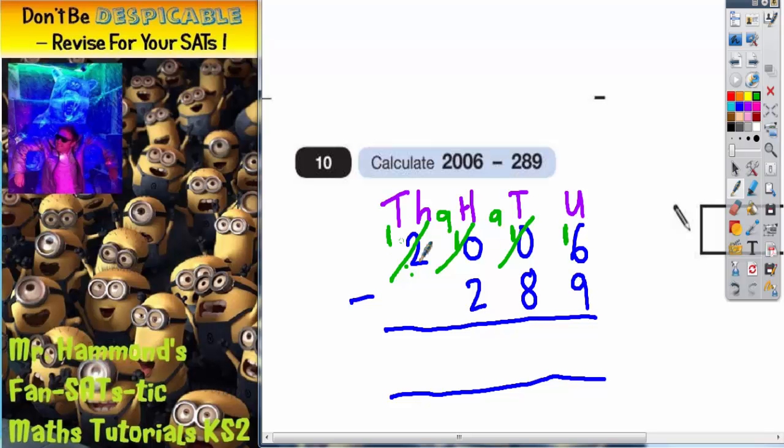And we've borrowed one from each column each time, so we've got a one in the units column and turned it into sixteen. Now we should be able to do it.